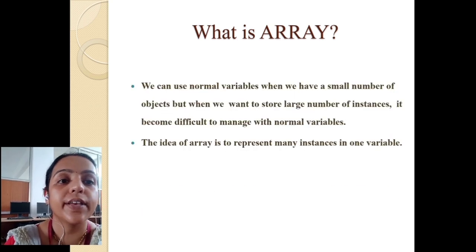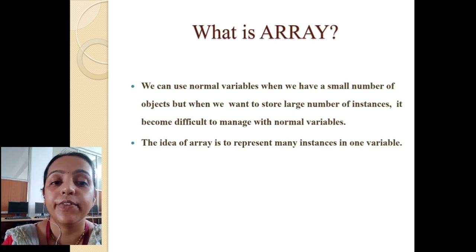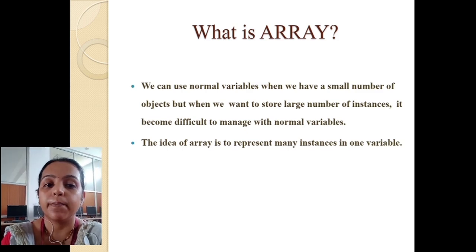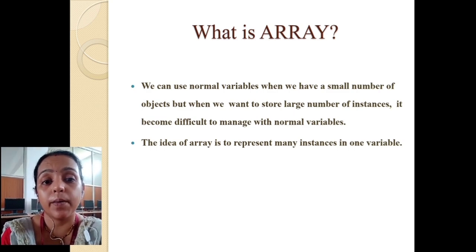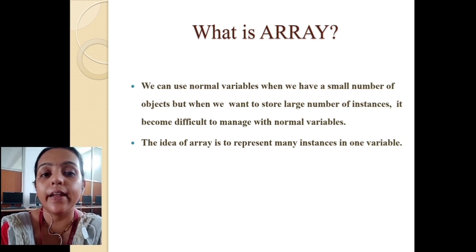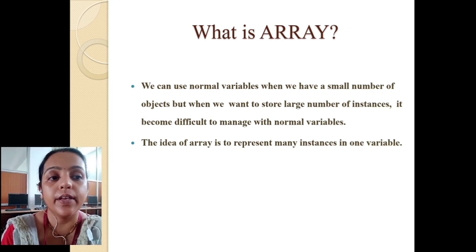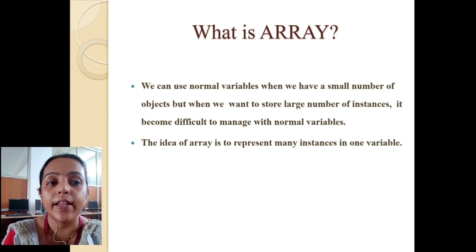We can use normal variables when we have a small number of objects, but when we want to store a large number of instances it becomes difficult to manage with normal variables. For example, to add two numbers we take three variables: C equals A plus B. But if we want to add 10 numbers, we would need 11 variables. That is why arrays are used when we have a large number of instances — the idea of an array is to represent many instances in one variable.